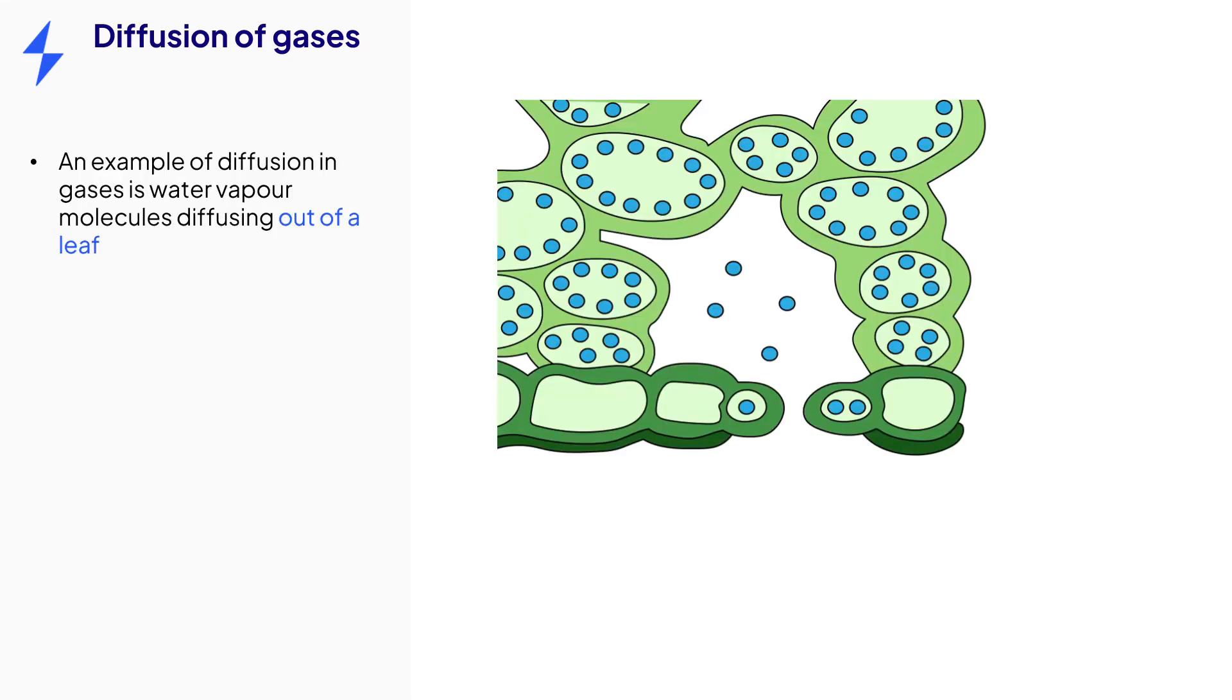Diffusion can happen in empty space or through a membrane. First, let's discuss diffusion in an empty space. An example of this would be water vapor exiting a leaf through a pore on the leaf surface. Here we can see water vapor molecules at high concentration inside a leaf. They diffuse through a pore in the leaf into the outside where there is a lower water vapor concentration. It is a good idea to learn some real-life examples of diffusion such as the one covered here.